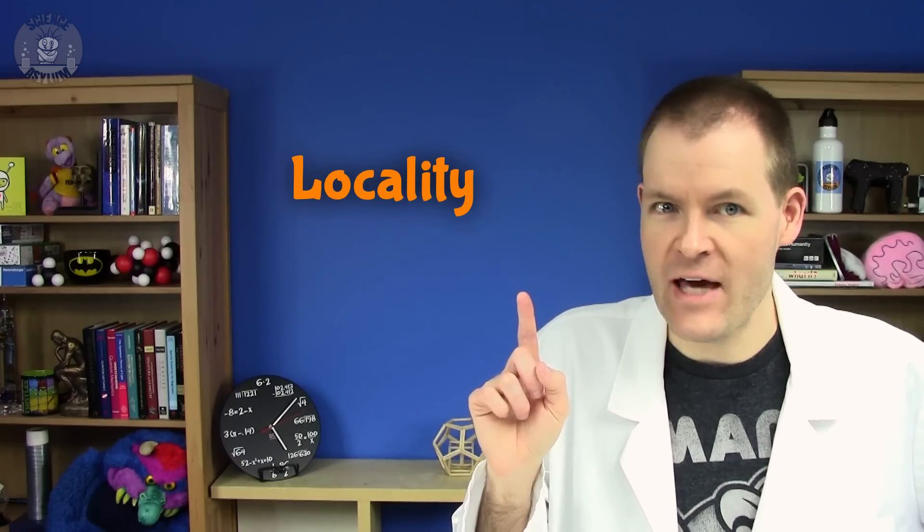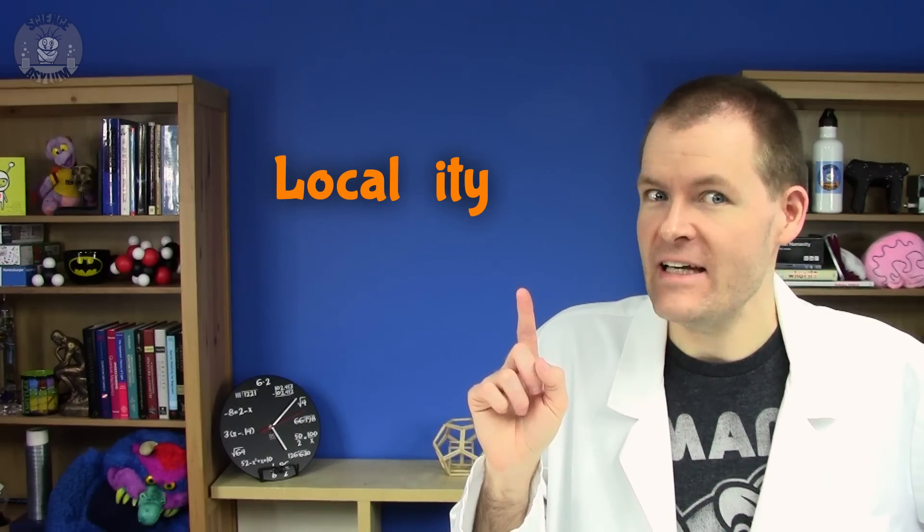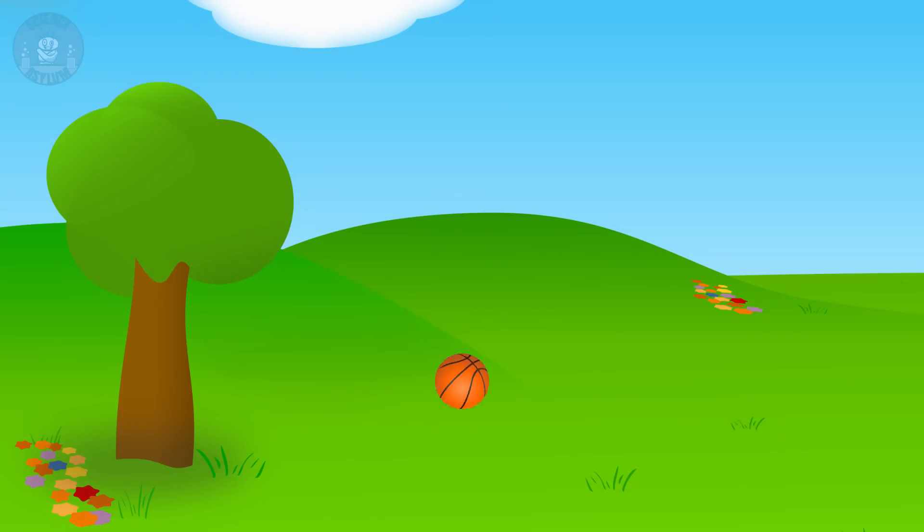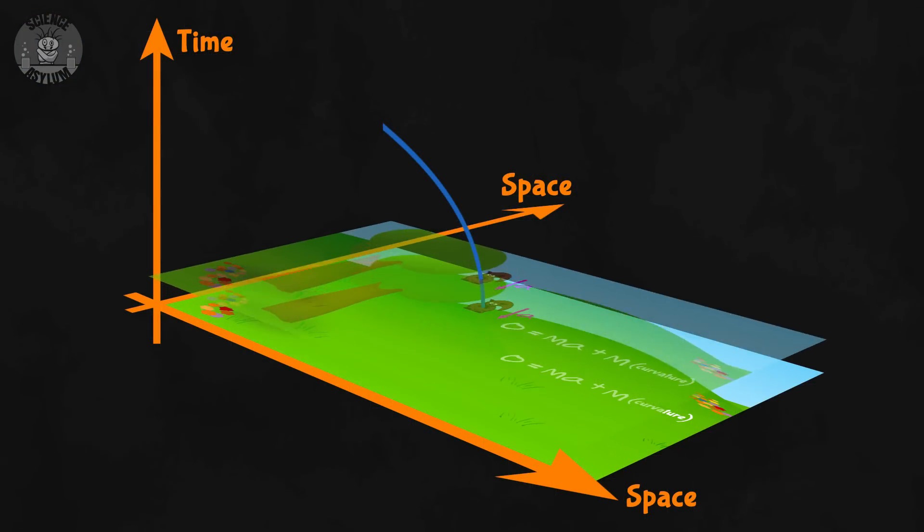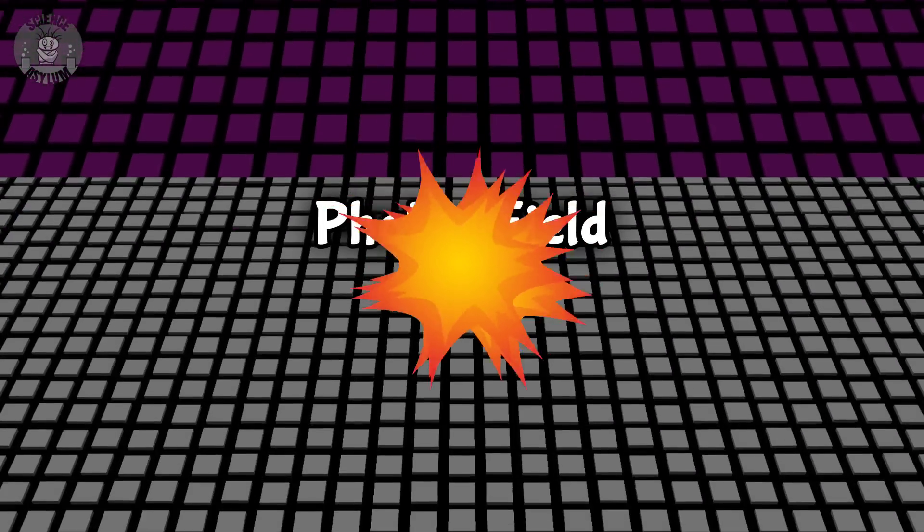There's one property of the universe we haven't considered, locality. We've discussed this in previous videos, but it could bear some repeating. Whether we're talking basic mechanics, electromagnetism, space-time curvature, or even quantum fields, the universe is inherently local. The idea is that a physical thing can only be influenced by its immediate surroundings.